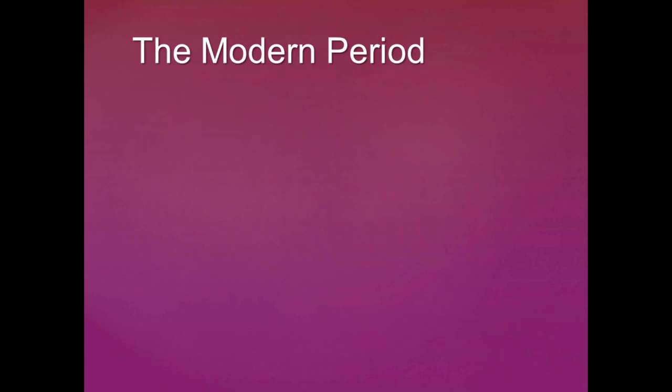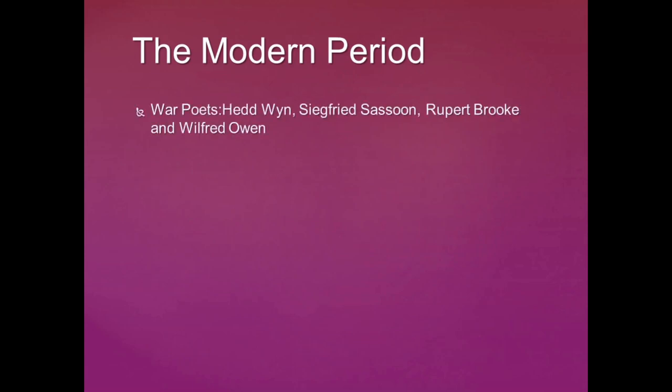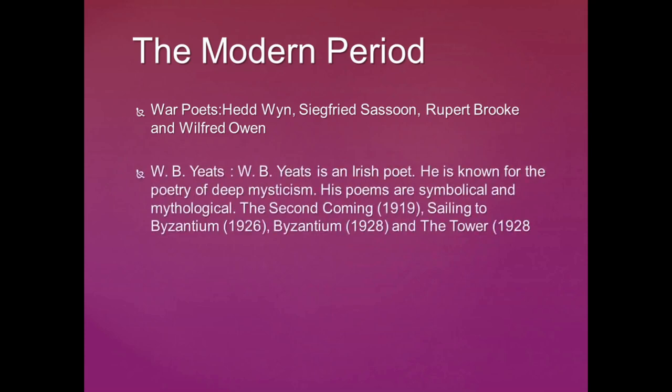The Victorian age is followed by the modern period, from 1901 to 1915, which has war poetry as the most important representative poetry. Edward Thomas, Siegfried Sassoon, Rupert Brooke, and Wilfred Owen are the war poets.